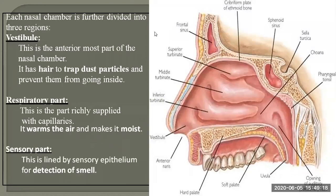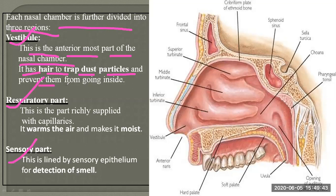The vestibule is the anterior-most part of the nasal chamber and has hair to trap dust particles and prevent them from entering — these hair are ciliate-like structures that trap dust particles which cannot enter the respiratory tract. Second is the respiratory part — this is richly supplied with capillaries, meaning there are many blood vessels, and it warms the air and makes it moist.